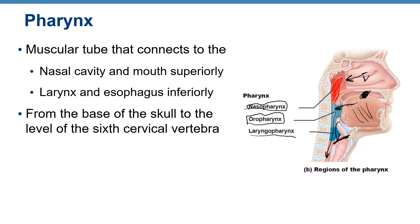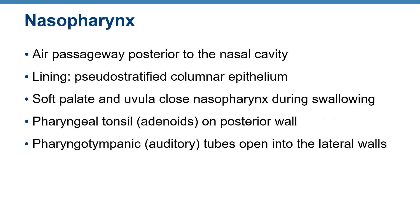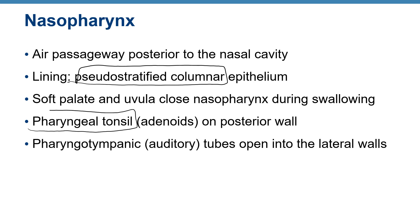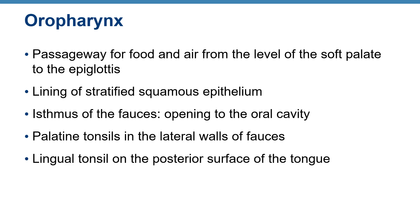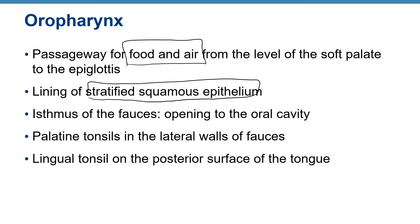The nasopharynx is posterior to the nasal cavity, lined by pseudostratified columnar epithelium, and contains the pharyngeal tonsils, also called adenoids. The oropharynx is a passageway for both food and air, lined by stratified squamous epithelium, and contains the palatine tonsils.